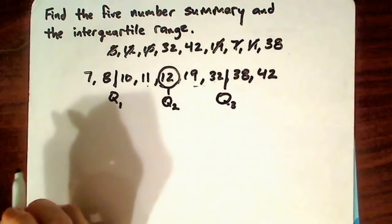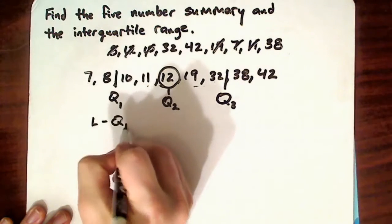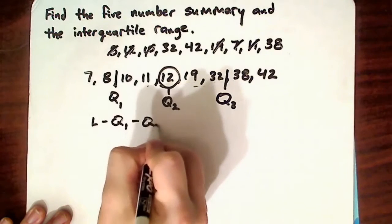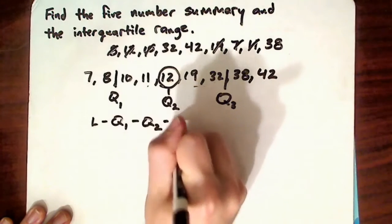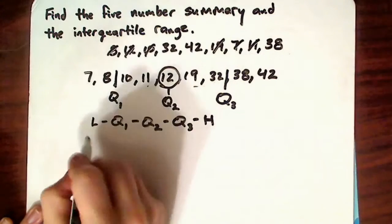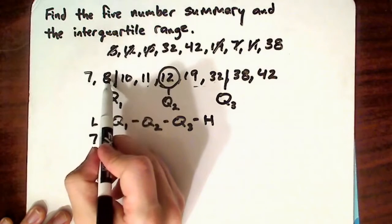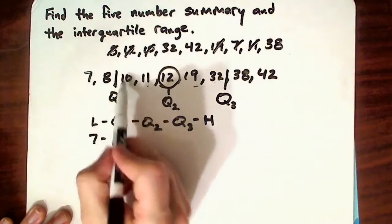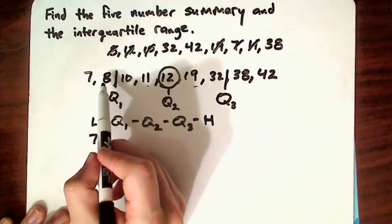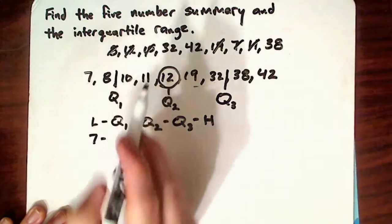So the five-number summary, which is the low, first quartile, second quartile which is also the median, third quartile, and the high, here would be 7. Now, if it's in between two numbers, you take the average of the two. So 8 plus 10 is 18, divided by 2 is 9.